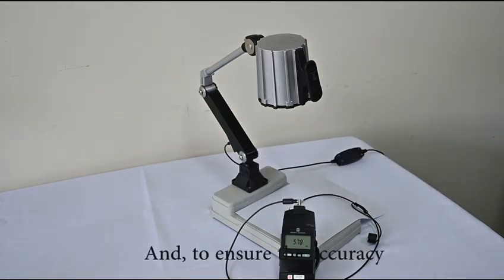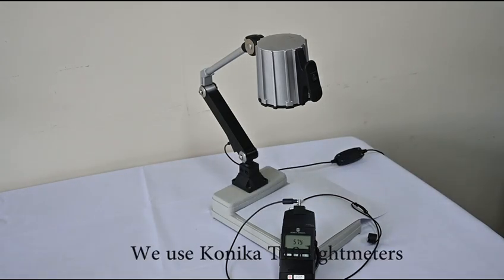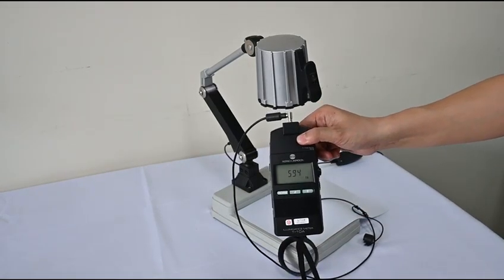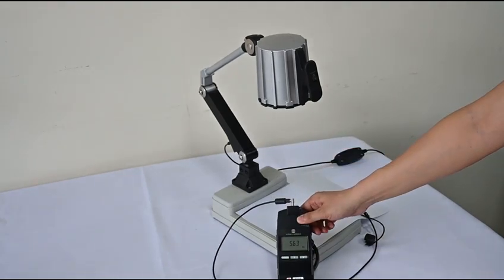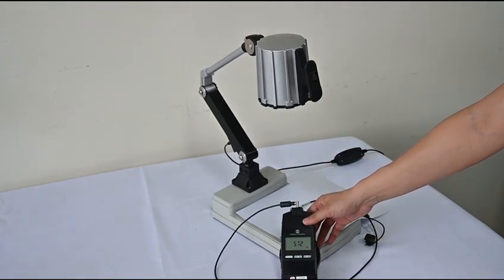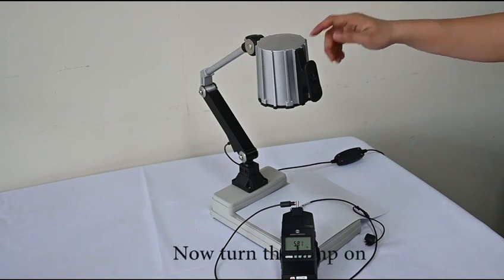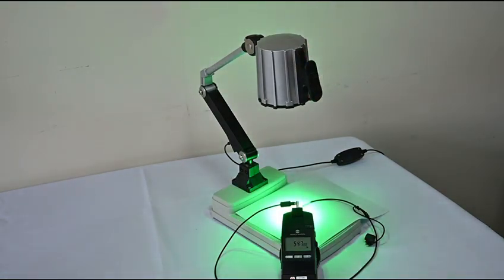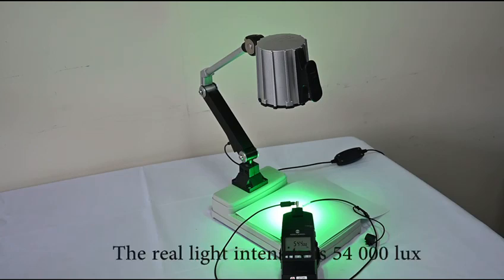And to ensure the accuracy, we use the Konica T10. Now turn the light on. You can see that the real light intensity is 54,000 lux.